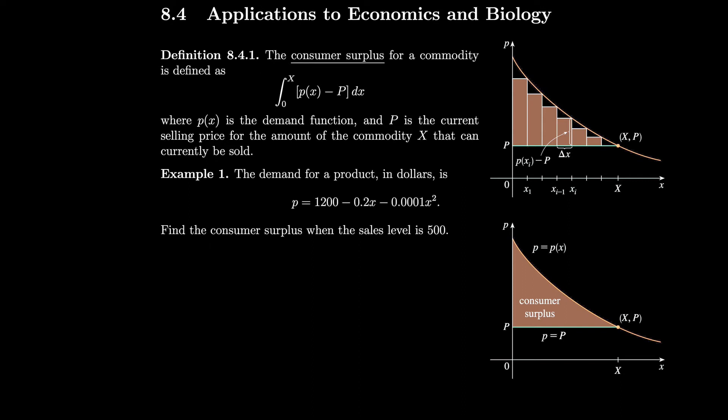Section 8.4: Applications to Economics and Biology. The consumer surplus for a commodity is defined as the integral of lowercase p(x) minus P from 0 to capital X, where p(x) lowercase is the demand function and capital P is the current selling price for the amount of commodity capital X that can currently be sold.